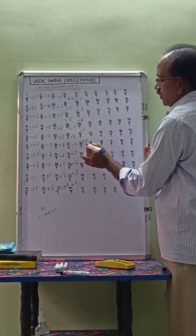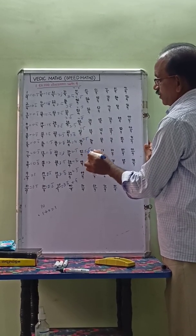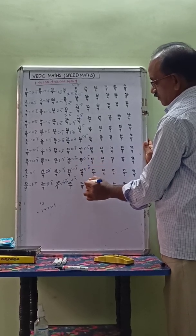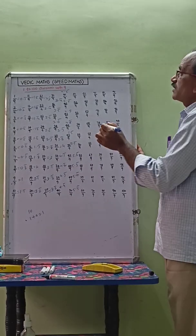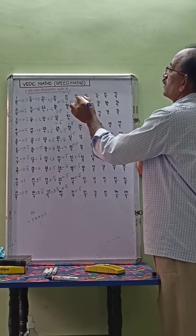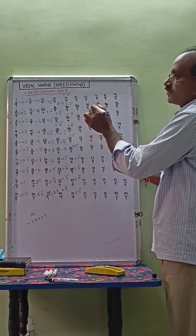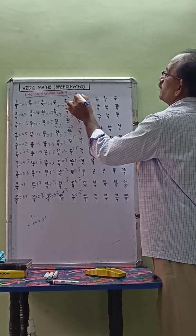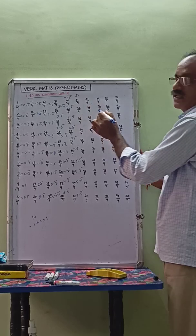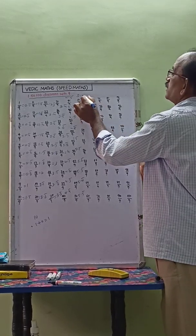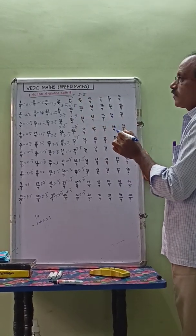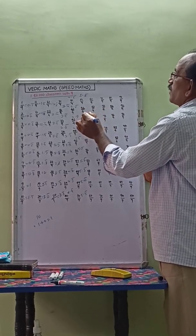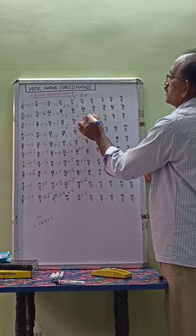46 by 9 equals 5.1 bar. 47 by 9 equals 5.2 bar. 48 by 9 equals 5.3 bar. 49 by 9 equals 5.4 bar. 50 by 9 equals 5.5 bar. 51 by 9 equals 5.6 bar. 52 by 9 equals 5.7 bar.